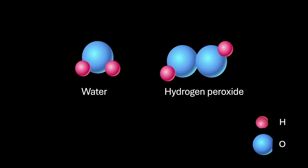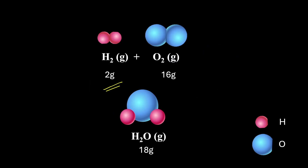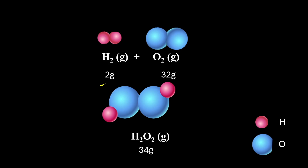What is common between the two? Both of them are made up of the two elements, hydrogen and oxygen. Let's first consider the formation of water. Two grams of hydrogen combines with 16 grams of oxygen to form 18 grams of water. And for the formation of hydrogen peroxide, two grams of hydrogen combines with 32 grams of oxygen to form 34 grams of hydrogen peroxide.